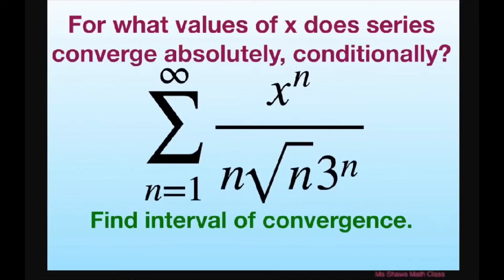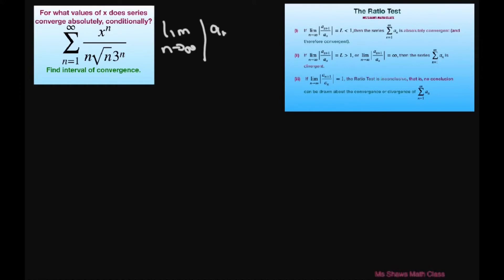Hi everyone. For what values of x does our series converge absolutely and/or conditionally? We're also going to find the interval of convergence. We're going to use the ratio test, and that means if the limit as n approaches infinity of the absolute value of a sub n+1 divided by a sub n equals L, we force it to be less than 1.